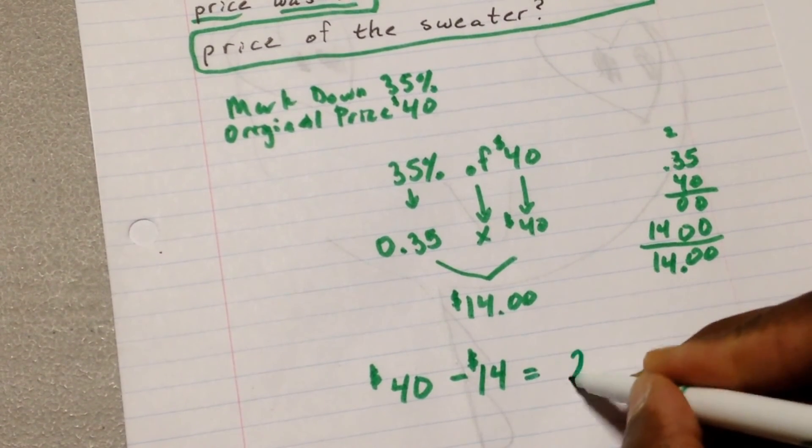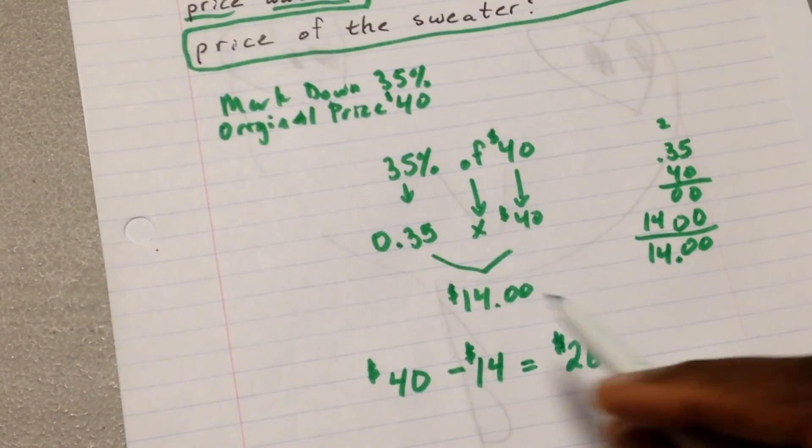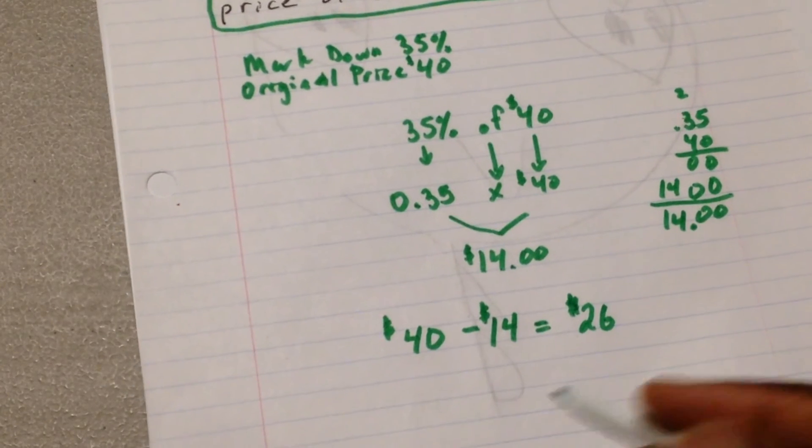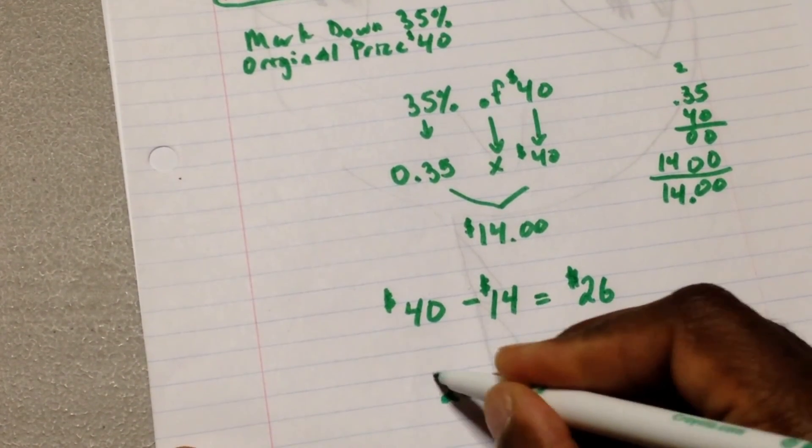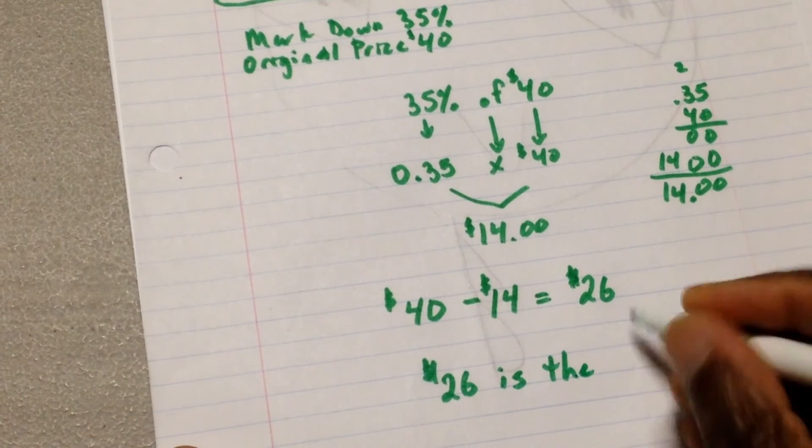And now we have $26 is the cost of the, or the sales price of the sweater. So what we have is $26 is the sales price.